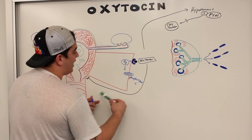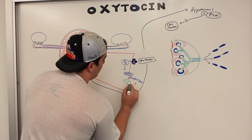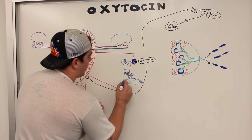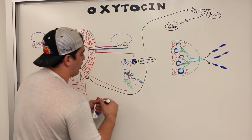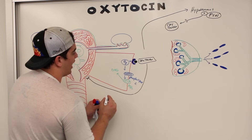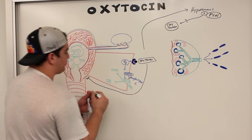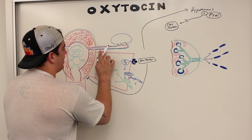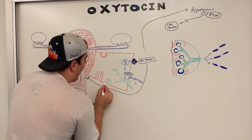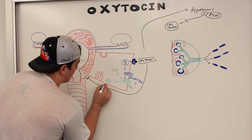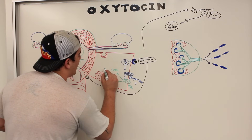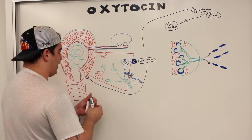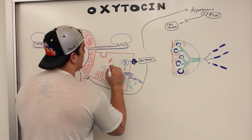Phospholipase C will actually break down a lipid component of the membrane called PIP2. Phospholipase C will break down this PIP2 into two components: one is called DAG, which stands for diacylglycerol, and the other is IP3. Smooth muscle cells have a little bit of sarcoplasmic reticulum, and also these things called caveoli, which are also calcium storage structures. IP3 will come and activate the sarcoplasmic reticulum or caveoli to push calcium out into the sarcoplasm.